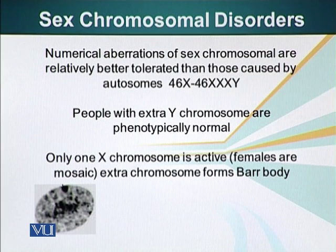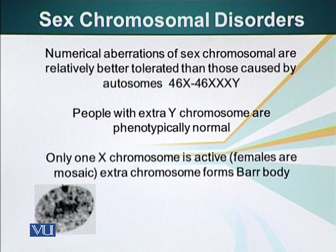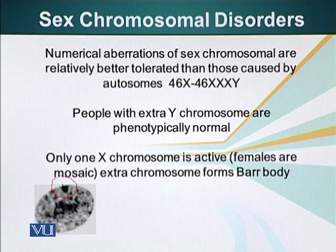People with an extra Y chromosome are phenotypically normal. One X chromosome is active in females and the other X chromosome is condensed and made inactive. This is also a test for determining the sex of a person with ambiguous genitalia — it's called the Barr body test. Cells from the buccal cavity are taken, put on a slide and stained for the chromosomes. You can see this sharp black spot, which is basically a condensed X chromosome.